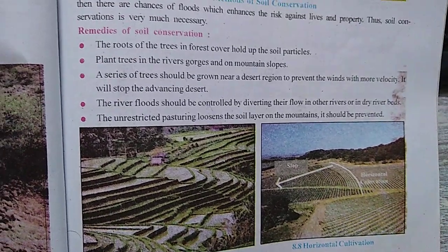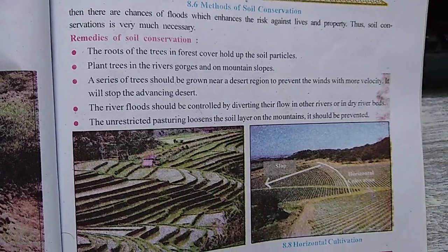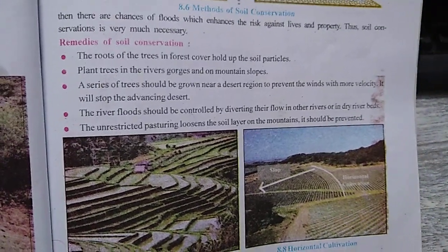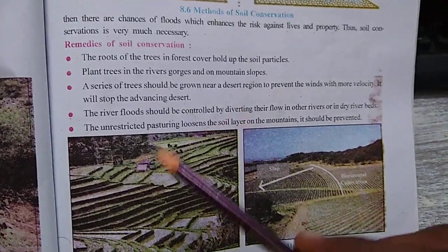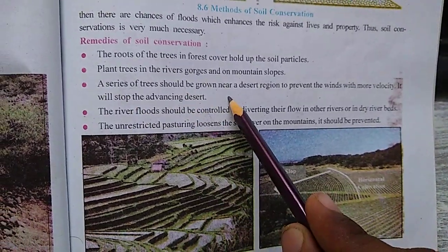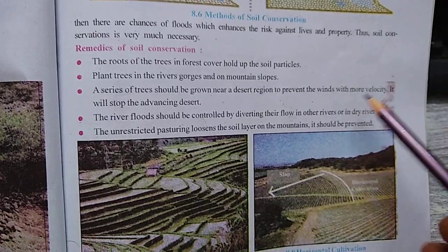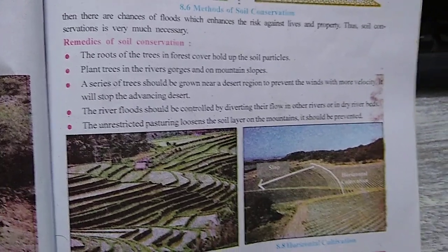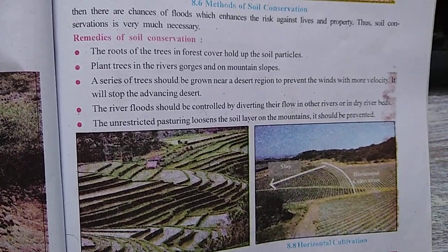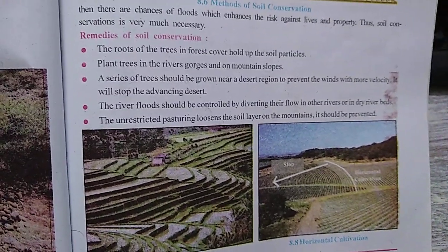A series of trees should be grown near desert regions to prevent winds from moving with more velocity and force. This will stop the desert from advancing — it will not allow the desert to spread further. If wind blows, the speed of the wind reduces because of the trees, and that reduced speed will not allow the desert to expand. If the desert does not expand, soil erosion is not possible.